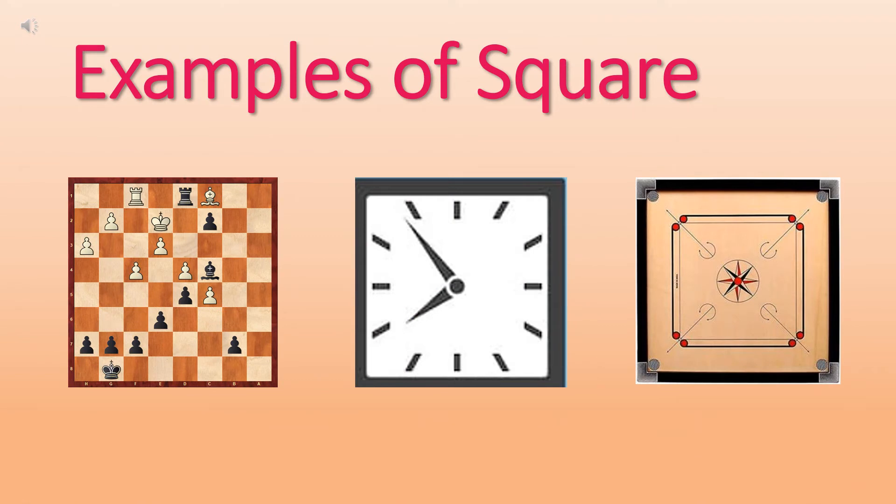Examples of square are a chess board. You can see a wall clock in the shape of square and a carom board. These are the examples of square.